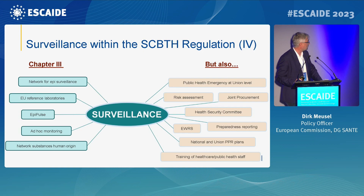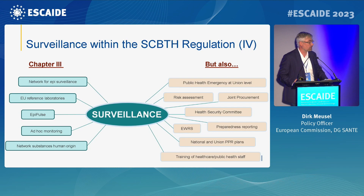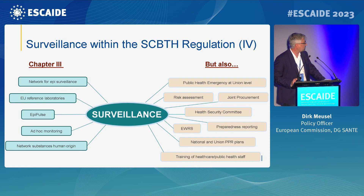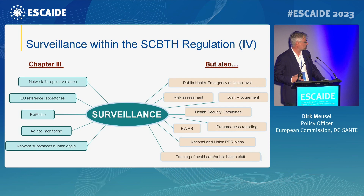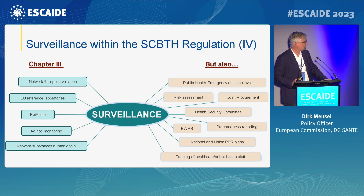Beyond the directly defined surveillance aspects, there are links to surveillance activities throughout the regulation: the new concept of public health emergency at union level; risk assessment and joint procurements; the Health Security Committee, which has an extended mandate; the early warning response system; preparedness reporting; and national and union preparedness and response plans — all heavily relying on surveillance activities. Surveillance within the regulation is quite a central point.